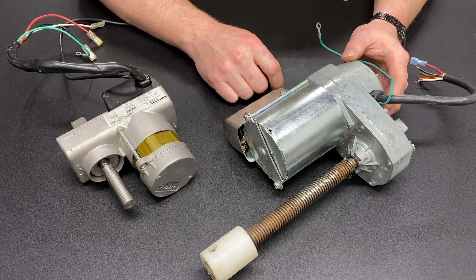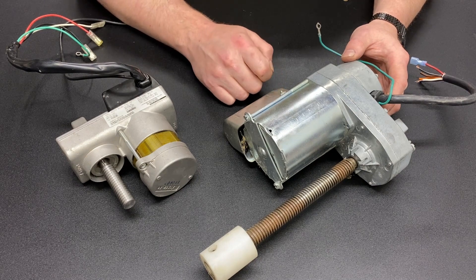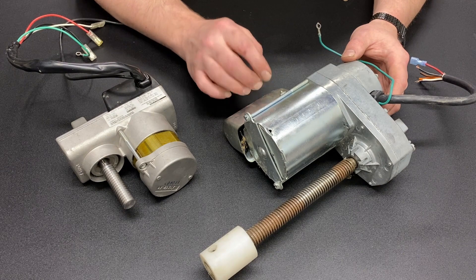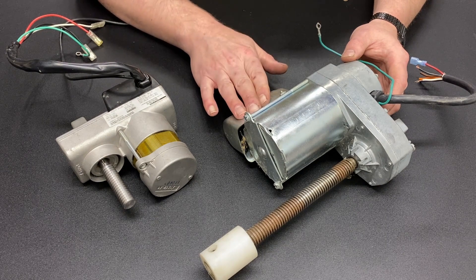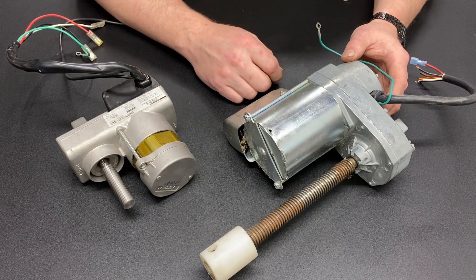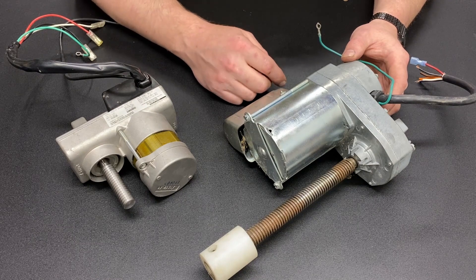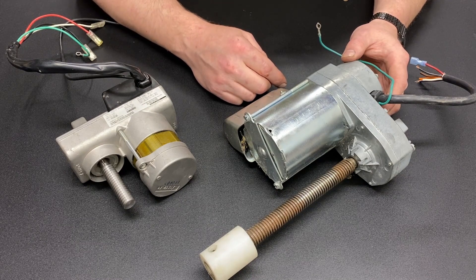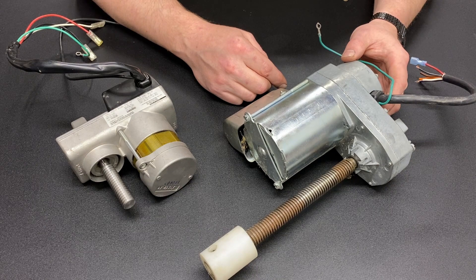The gearing in it basically turns RPM into torque. So let's say this motor spins at 500 RPMs. The gearing inside may drop it down to say 50 RPMs, and in doing so, you've gained 10 times the torque.